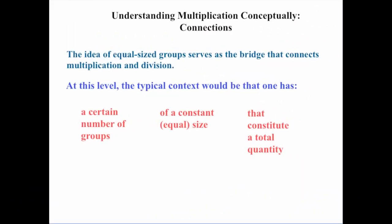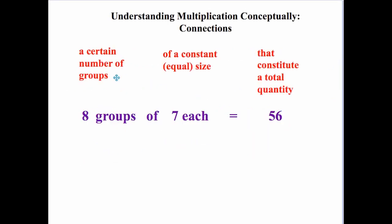At this level, the typical context would be one where you would have a certain number of groups of a constant equal size that would constitute a total quantity. We have a certain number of groups of a constant equal size that constitute a total quantity. Let's say we have eight groups of seven each. That would be our total of 56.